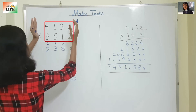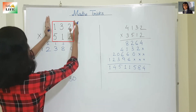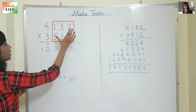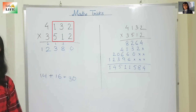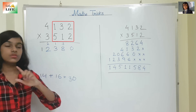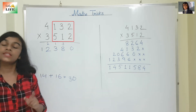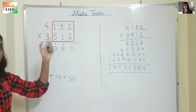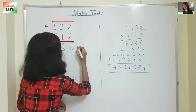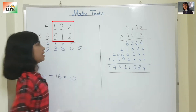Now we are going to reduce one column from the left side — so this is now 3 columns. We do: 5 into 2 is 10, 2 into 1 is 2, so 10 plus 2 is 12. And 3 into 1 is 3, so 12 plus 3 is 15. We write 5 and carry 1.